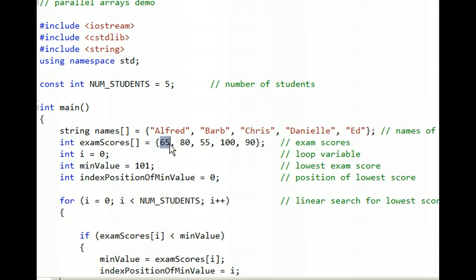I look at the 65 and think, okay, that's low, so I'll remember 65. But I also remember that the 65 was found in position 0. 80 is not lower. 55, it's lower. So I not only remember 55, but I also remember where it was found.